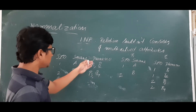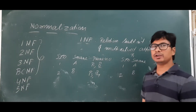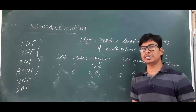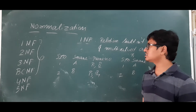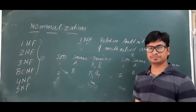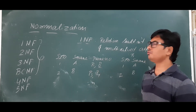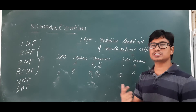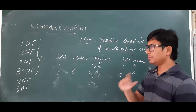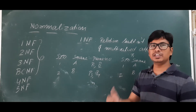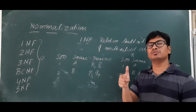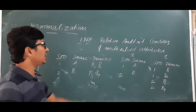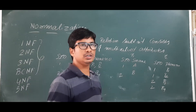The First Normal Form says it does not allow multi-valued attributes. If a relation has multi-valued attributes, it is not in First Normal Form. Remember, by default all tables in DBMS should be in First Normal Form. A relation with multi-valued attributes is not a proper relation. We need to decompose such a relation into sub-relations such that each is in 1NF.